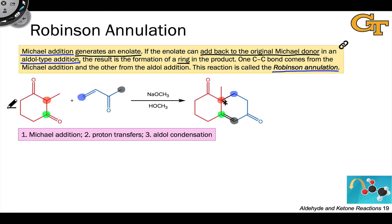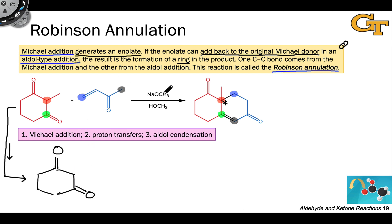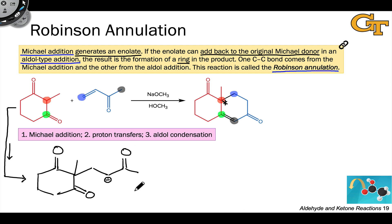I want to look at the mechanism in broad brushstrokes, because the details we've actually already seen in previous videos on the aldol condensation and Michael reaction. The first few elementary steps involve the Michael addition of the Michael donor to the Michael acceptor. The alkoxide base deprotonates the compound, generating a nucleophilic and stabilized enolate. The enolate then adds to the alpha-beta-unsaturated ketone to give a new enolate through a Michael addition process.